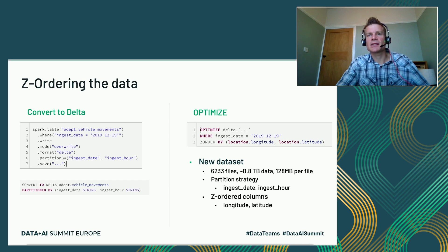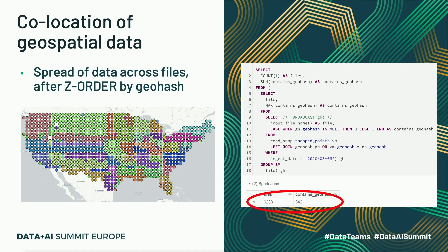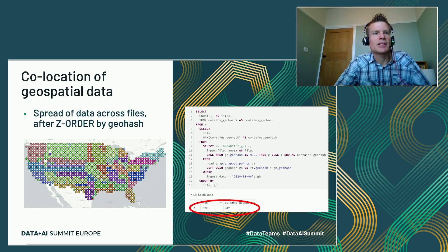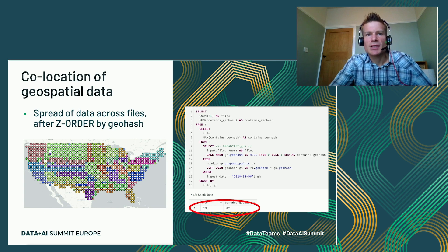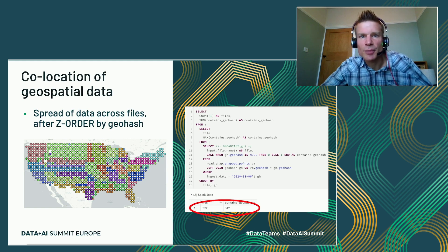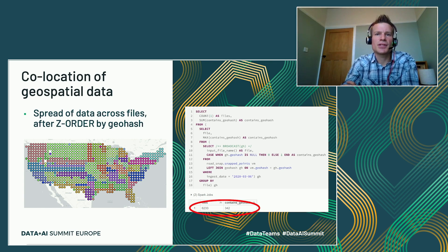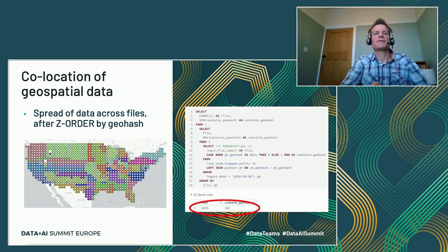Looking at the effect of Z-ordering: the files are color-coded to show which files contain data for which areas. The Midwest is sparse and contained in fewer files, while busy cities like New York and LA might each occupy their own file. The files are kept the same size by the Databricks runtime, but the data within them is co-located geospatially. Running the same query using `input_file_name`, we can see our data for the Austin polygon is now contained in just over 340 files — only about 10% of the original 2,500 files.